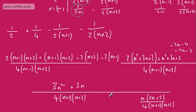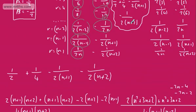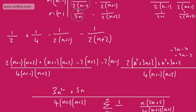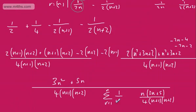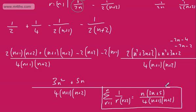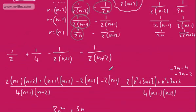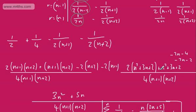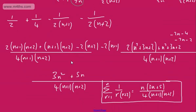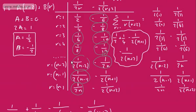So we can now state that the sum from r equals 1 to n of 1 over r(r+2) is equal to n(3n+5) over 4(n+1)(n+2). Hopefully that gives you a good idea of what you're doing using the method of differences to sum a finite series.